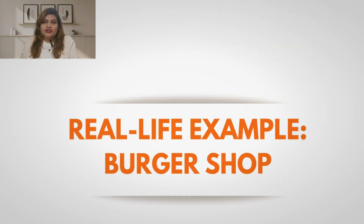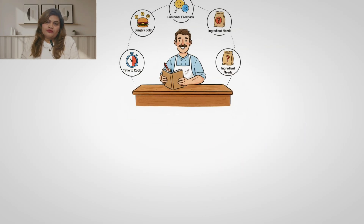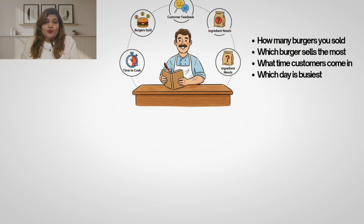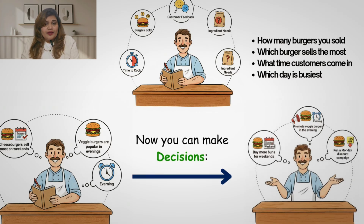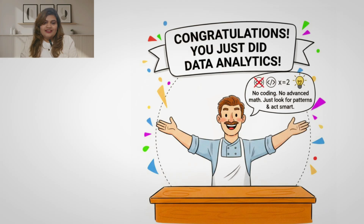Real-life example — burger shop. Imagine you run a small burger shop. Every day you note how many burgers you sold, which burger sells the most, what time customers come in, which day is busiest. After a month you notice: cheeseburgers sell most on weekends, veggie burgers are popular in evenings, and sales drop on Mondays. Now you can make decisions — buy more buns for the weekend, promote veggie burgers in the evening, and run a small Monday discount campaign. Congratulations, you just did data analytics. At no point did you need coding or advanced math — you just looked at the data, found patterns, and acted smart.